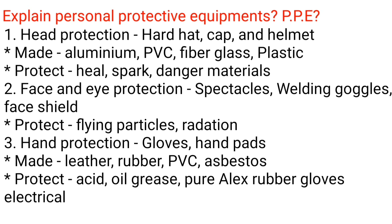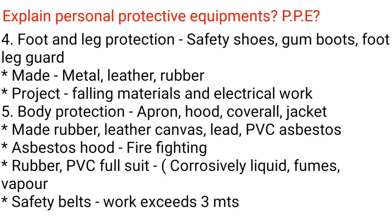3. Hand protection: gloves and hand pads. Made of leather, rubber, PVC, or asbestos. Protects against acid, oil, grease; rubber gloves for electrical work. 4. Foot and leg protection: safety shoes, gum boots, and foot-leg guard. Made of metal, leather, or rubber. Protects against falling materials and electrical hazards. 5. Body protection: apron, hood, coverall, and jacket. Made of rubber, leather canvas, lead, PVC, or asbestos. Asbestos hood for firefighting; rubber/PVC full suit for corrosive liquids, fumes, and vapors.